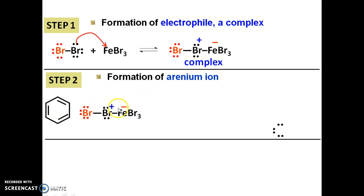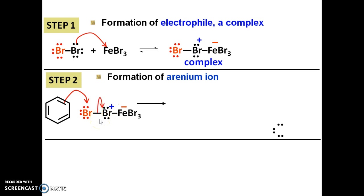Don't forget to copy the charge in your complex. One pi bond — doesn't matter which — will attack the Br that doesn't have a charge. We only want to take one Br, so we need to break the Br–Br bond. Since this Br has a positive charge, we need to give back electrons to make it neutral. So we give these 2 electrons to Br, breaking the bond and taking only one Br.